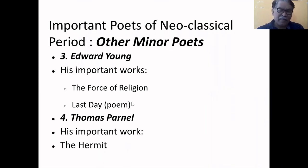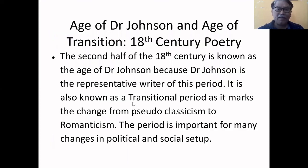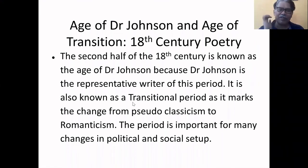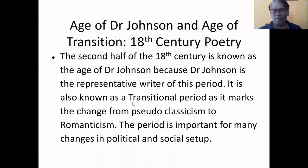So this is all about the first half of the 18th century — what we call the Age of Pope, the Augustan age in English literature. We remember Alexander Pope, John Gay, Matthew Prior, Edward Young, and Thomas Parnell. The next half is the Age of Dr. Johnson. We can also include here an Age of Transition, because after this age we see the entry of Romantic poetry in 1798.